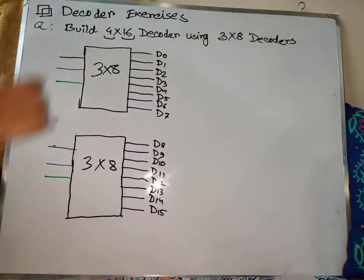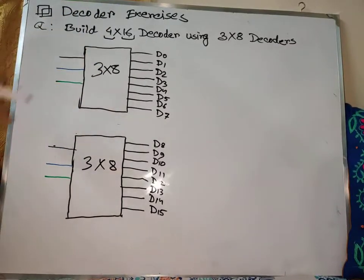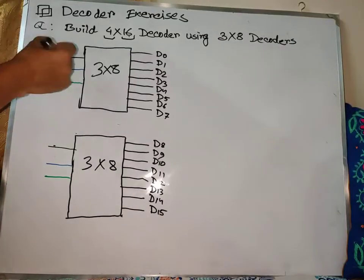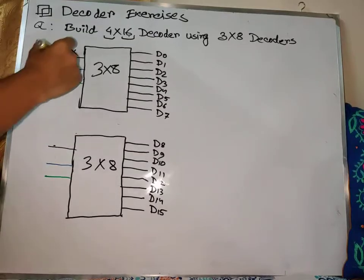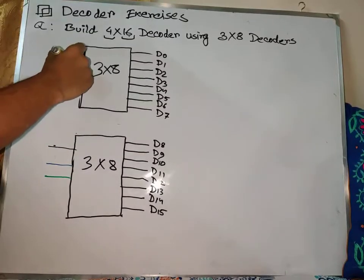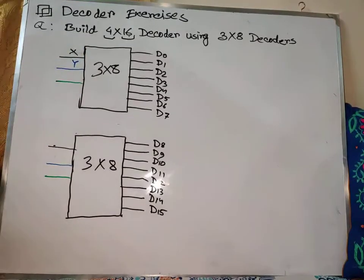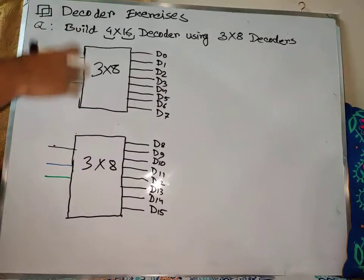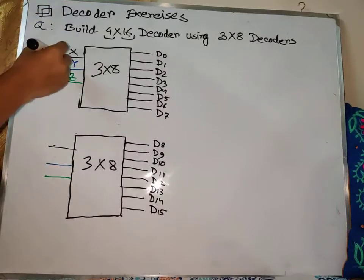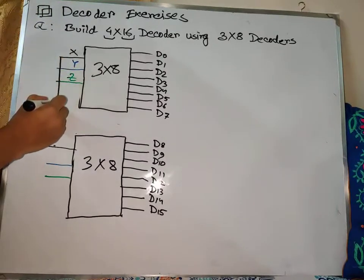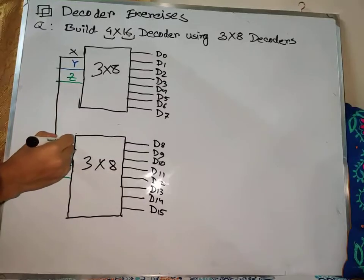So we have to do 4 inputs total. We have to mark this — this is Y and the green one is Z. So if we have the input, we will have the input of the input. Meaning, X is the first input.